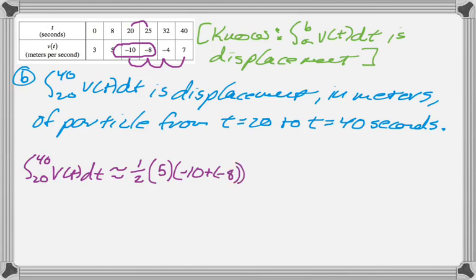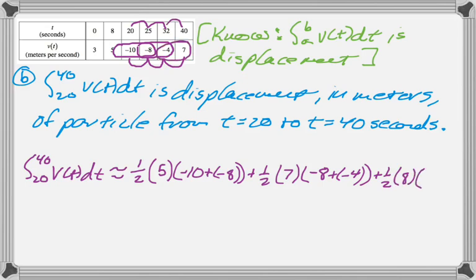and then the next one, it'll be one half, and then the height is going to be 7 in this case, and then the sum of the bases, and we have that, and then one half, and the height in this case is 8, and the sum of the bases.